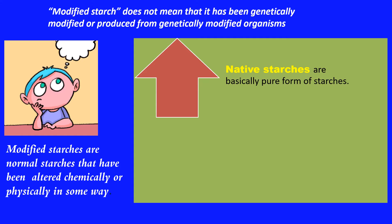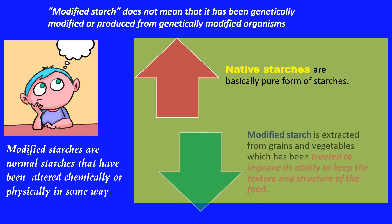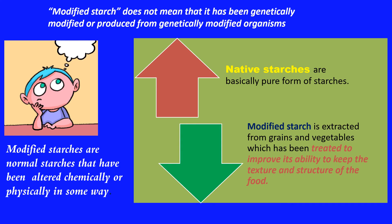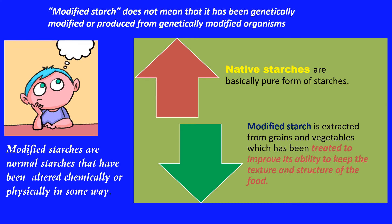Looking at starch which needs to be modified, let us understand why starch has to be modified and how it differs from native starch. Native starch, referred to as starch in its original form, is basically a pure form of starch molecules. Modified starch is a terminology used to identify grains and vegetables which have been treated to improve their ability to keep the texture and structure of food. Modified starch does not mean it has been genetically modified or produced from genetically modified organisms. Modified starches are normal starch molecules that have been altered chemically, physically, or by a variety of other techniques.